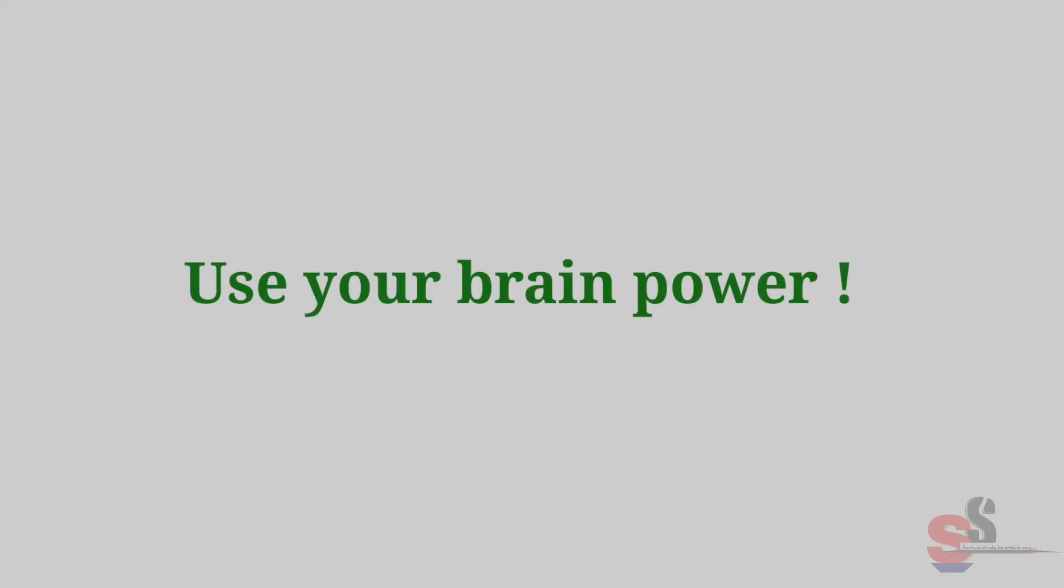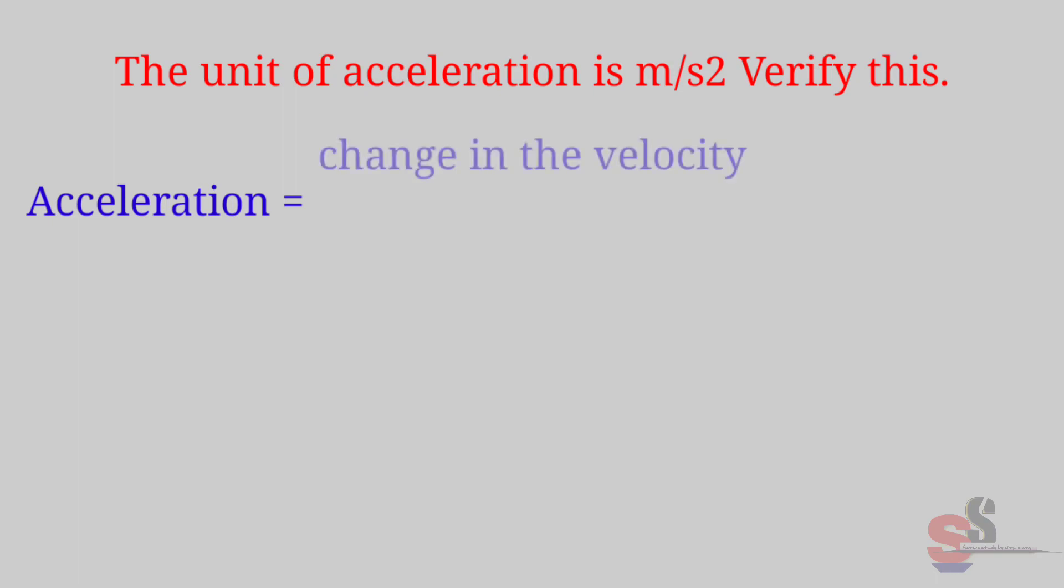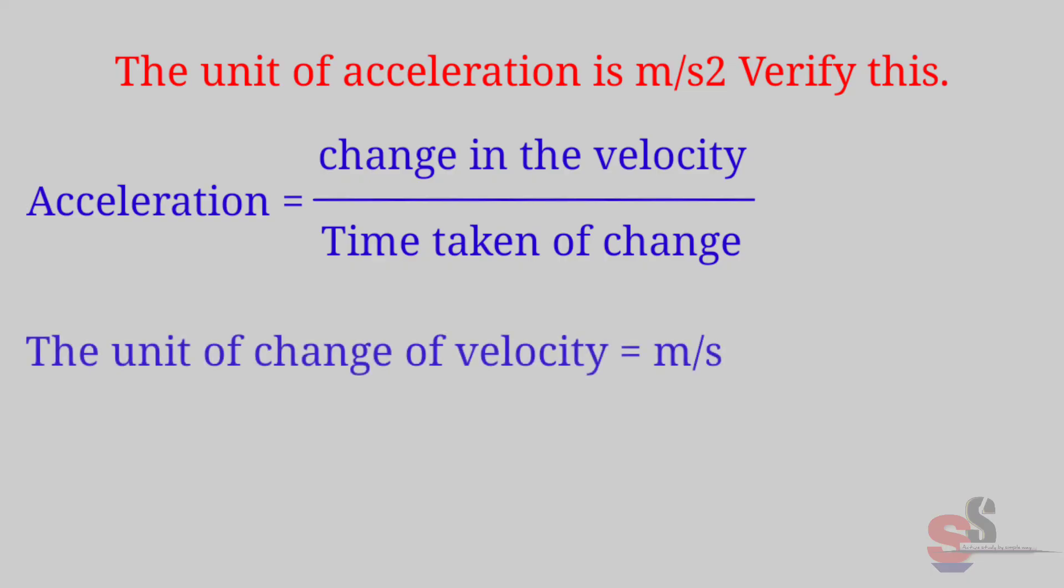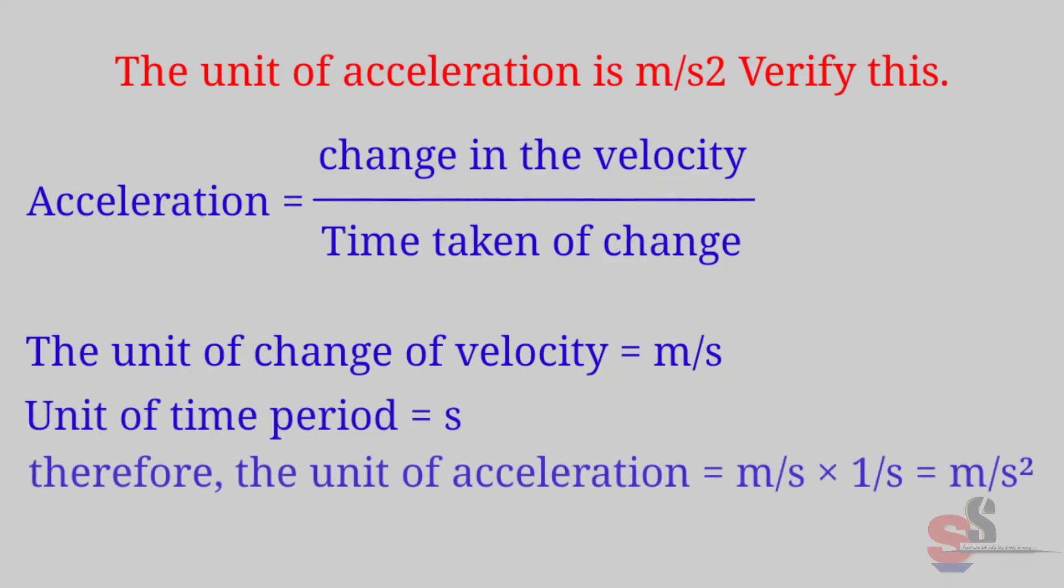Use your brain power: Textbook page number 48. The unit of acceleration is meter per second square. Verify this. Answer: Acceleration is equal to change in the velocity upon time taken of change. The unit of change of velocity is meter per second. Unit of the time period is second. Therefore, the unit of acceleration is equal to meter per second into one upon second is equal to meter per second square.